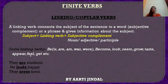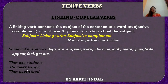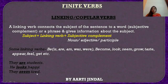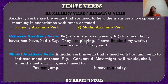Example se samajhte hain. 'They are students' — ve vidyarthi hain. Isme 'are' linking verb hai kyunki yeh subject ko ek aise word se jod rahi hai jo subject ke baare mein bata raha hai ki wo kya hain — students. Yahan subjective complement ke roop mein noun use kiya gaya hai. 'He looks happy' — veh prasanna dikhta hai. Isme 'look' linking verb hai, aur 'happy' — jo ki adjective hai — subjective complement ke roop mein use hua hai. 'They seem tired' — ve thake hue pratit hote hain. Isme 'seem' linking verb hai aur 'tired' — jo ki past participle hai — subjective complement ke roop mein use kiya gaya hai.